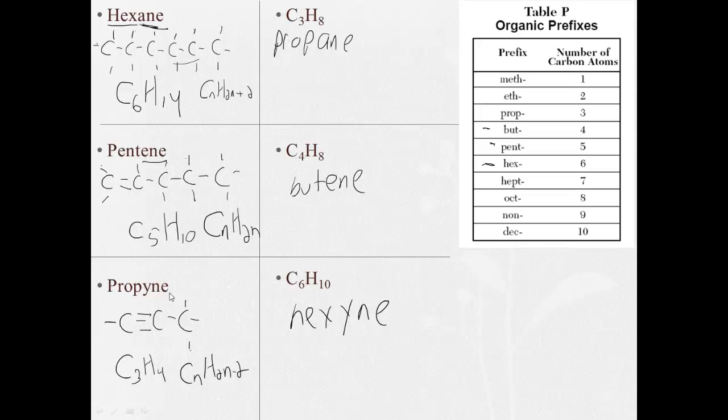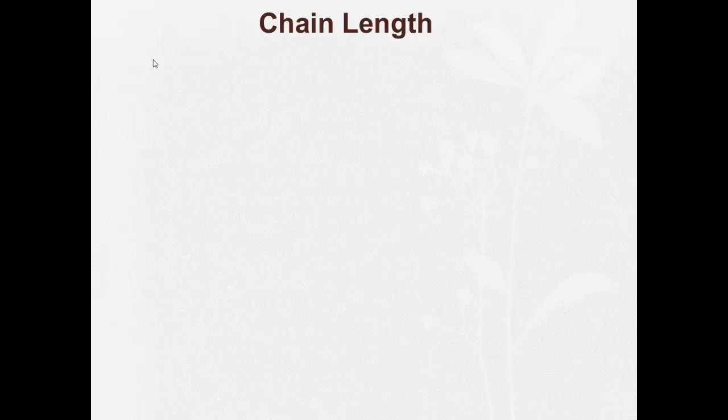And these carbons, we can see there's different chain lengths. When we have all these carbons bonded together, we call that a chain. So chain length becomes important. As chain length increases, it gets longer, boiling point increases. Well, why does boiling point increase? Well, there must be stronger intermolecular forces. They become less flammable, remember flammable, kind of like a flame, so less burnable.